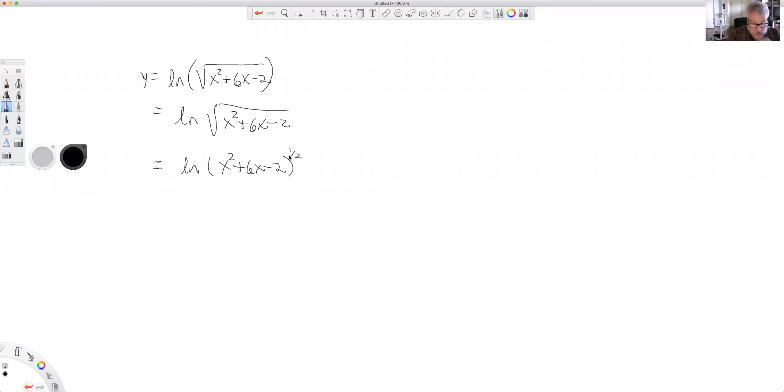So to differentiate this, we have an exponent acting on something inside the logarithmic function. I could write this as one-half ln(x² + 6x - 2), or I could leave it like this and just do it that way. So I'll do it both ways.